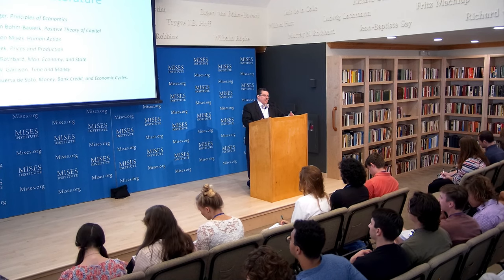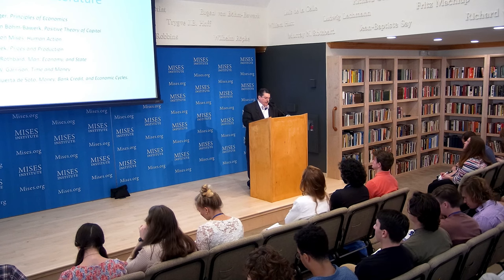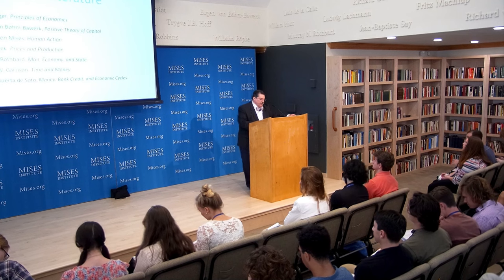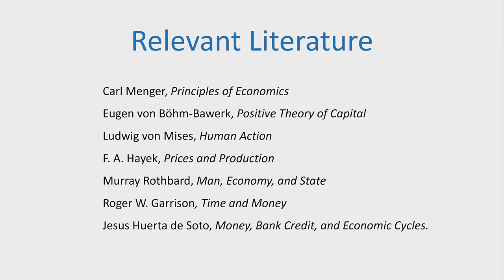There is a large and vast literature that can be drawn upon to understand capital theory. Works by Carl Menger, his Principles of Economics, Böhm-Bawerk's Positive Theory of Capital, Mises' Human Action, Hayek's Prices and Production, Murray Rothbard's Man Economy and State, Roger Garrison's Time and Money, and Jesús Huerta de Soto's Money, Bank Credit, and Economic Cycles have all contributed to developing a causal realist praxiological capital theory helpful in understanding both the nature of production and the workings of the entire social macroeconomy.